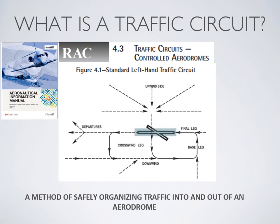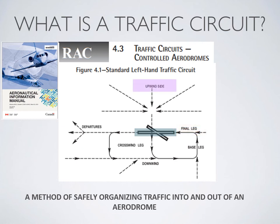Assuming the runway is in use, you build a standard circuit around it using all left-hand turns. The circuit has specified legs: the crosswind leg, the downwind leg, the base leg, and the final leg. When flying, you drop the word 'leg' — just say 'on base,' 'on final,' 'on downwind.' You also have the upwind side, which is always opposite to the circuit side.